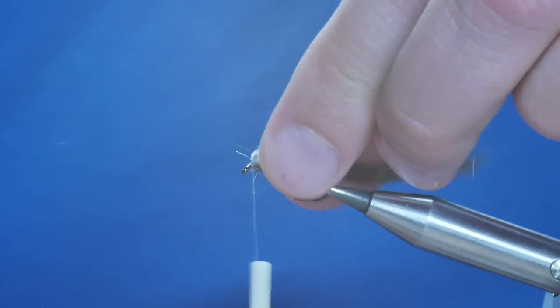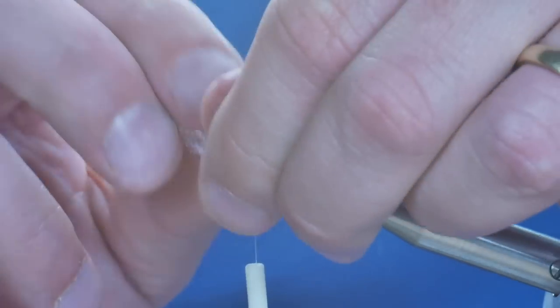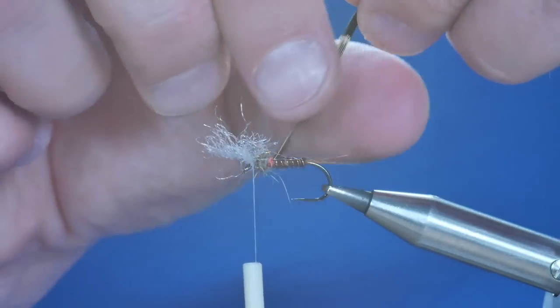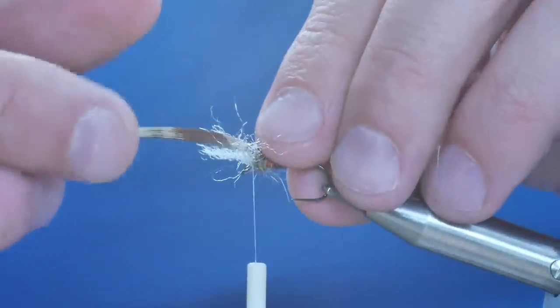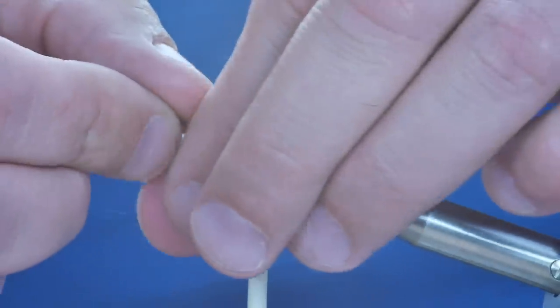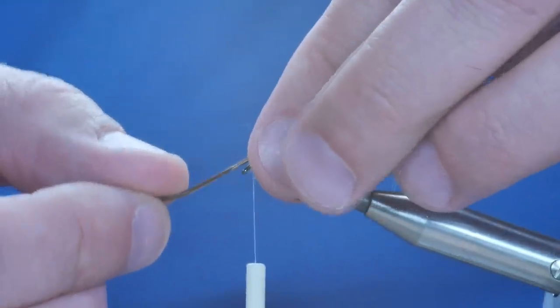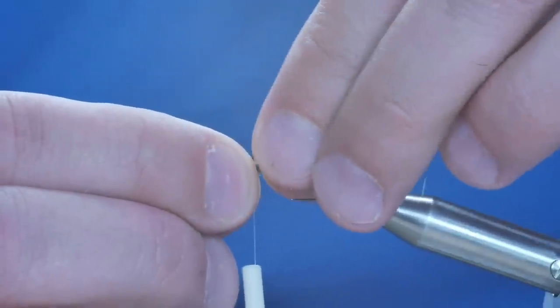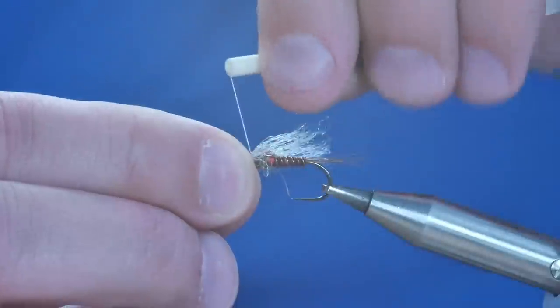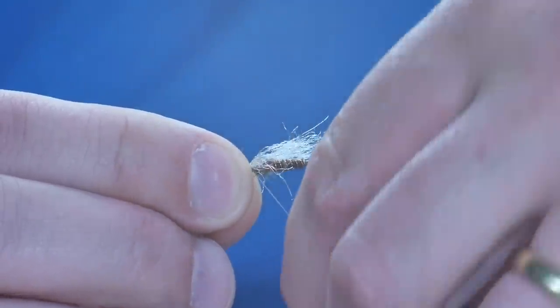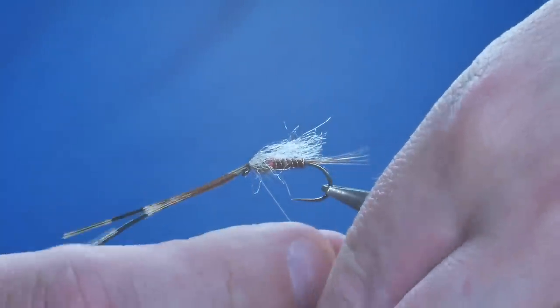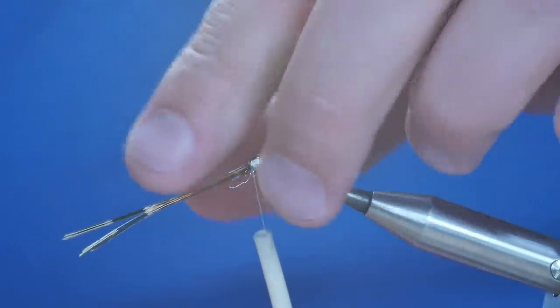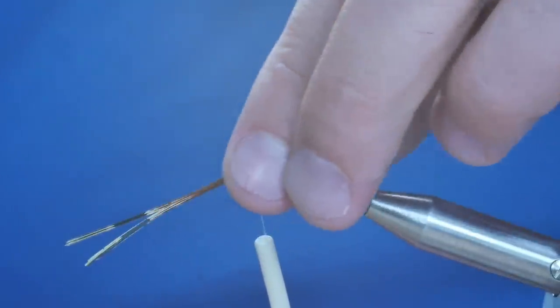So I'm just going to take a couple more turns at the front. Then bring a thorax cover over the top and sweep everything back out of the way. And excuse my fingers, I'm putting one turn in just to hold it into place so I can let go of the thorax cover at the front.